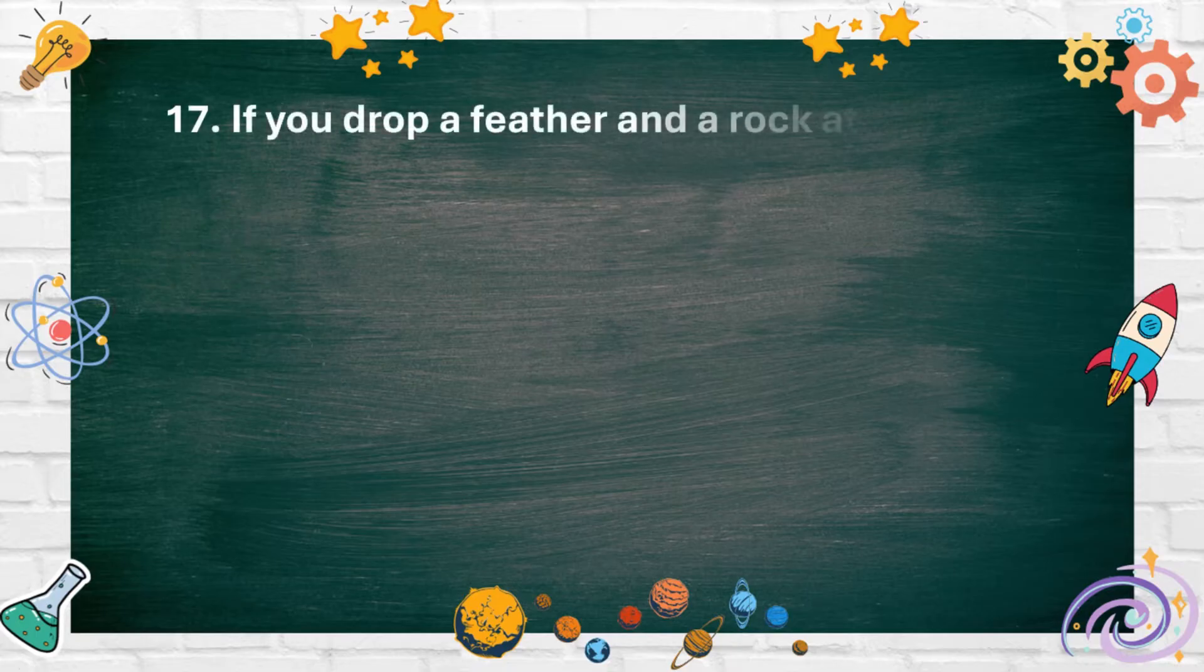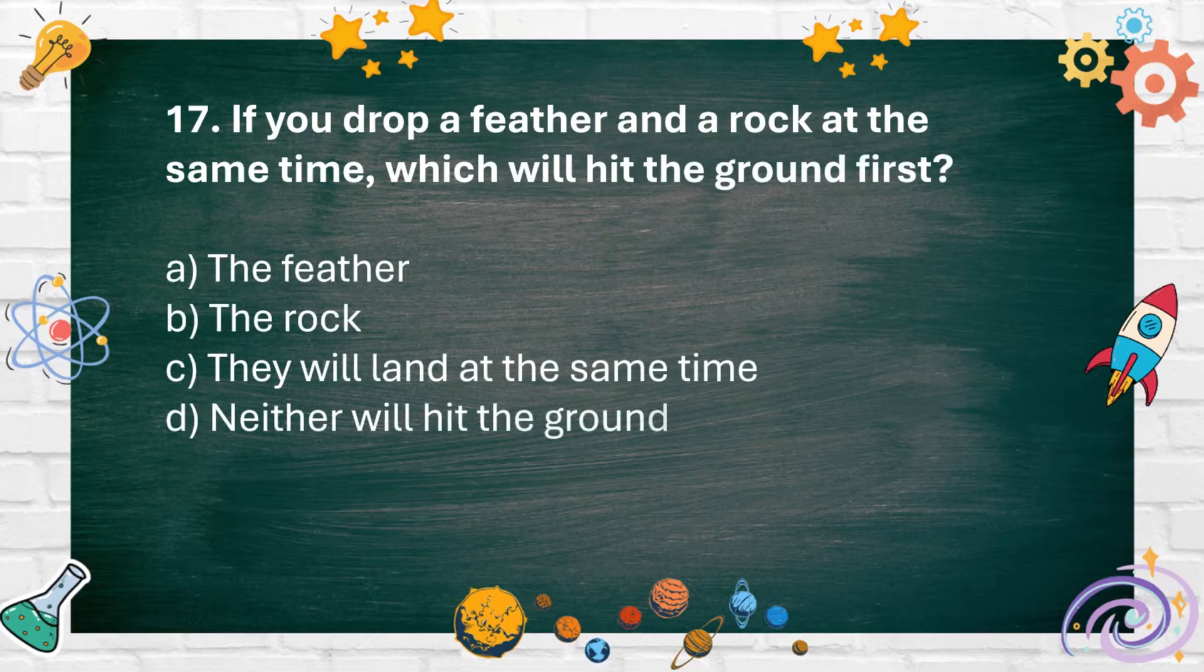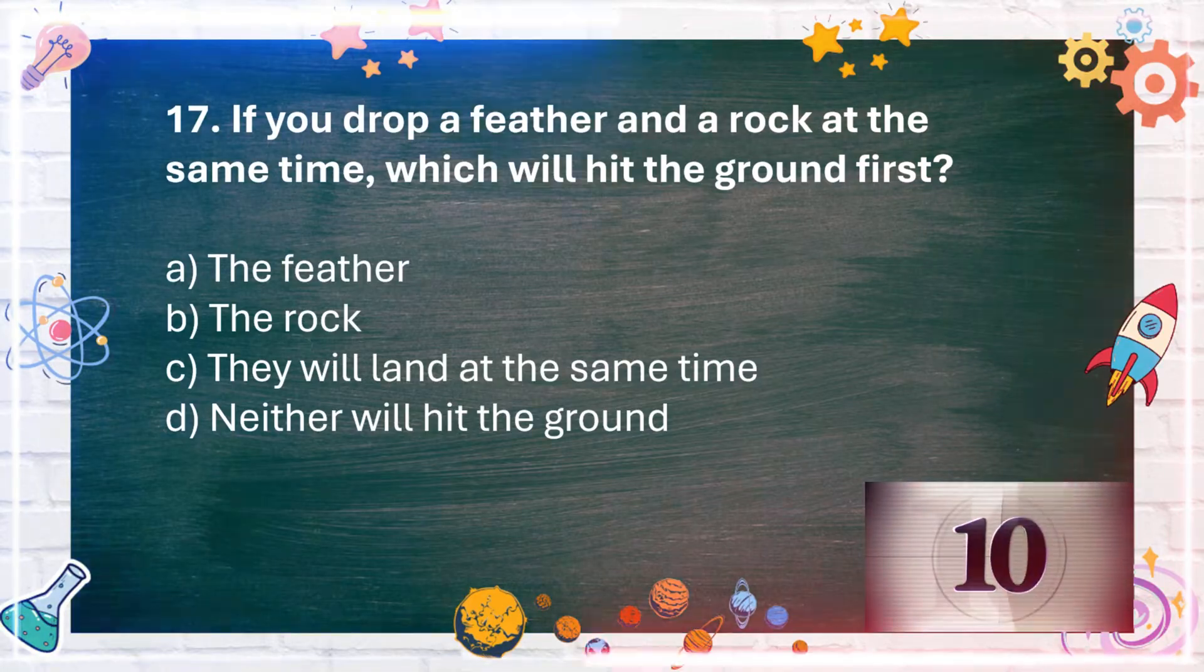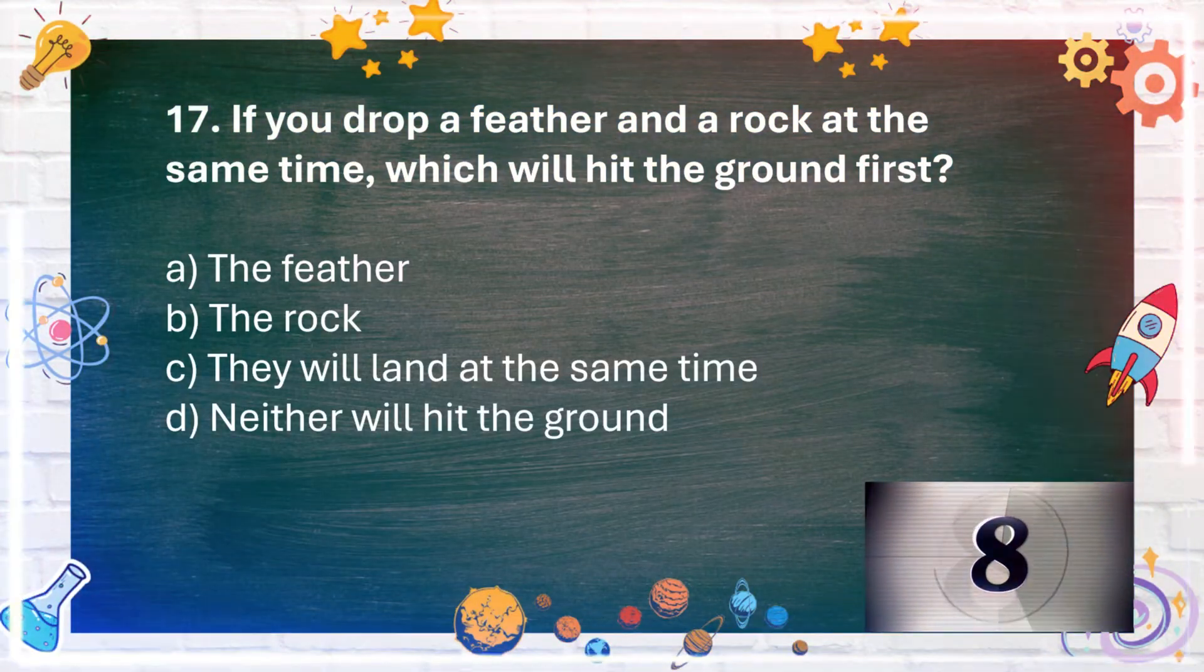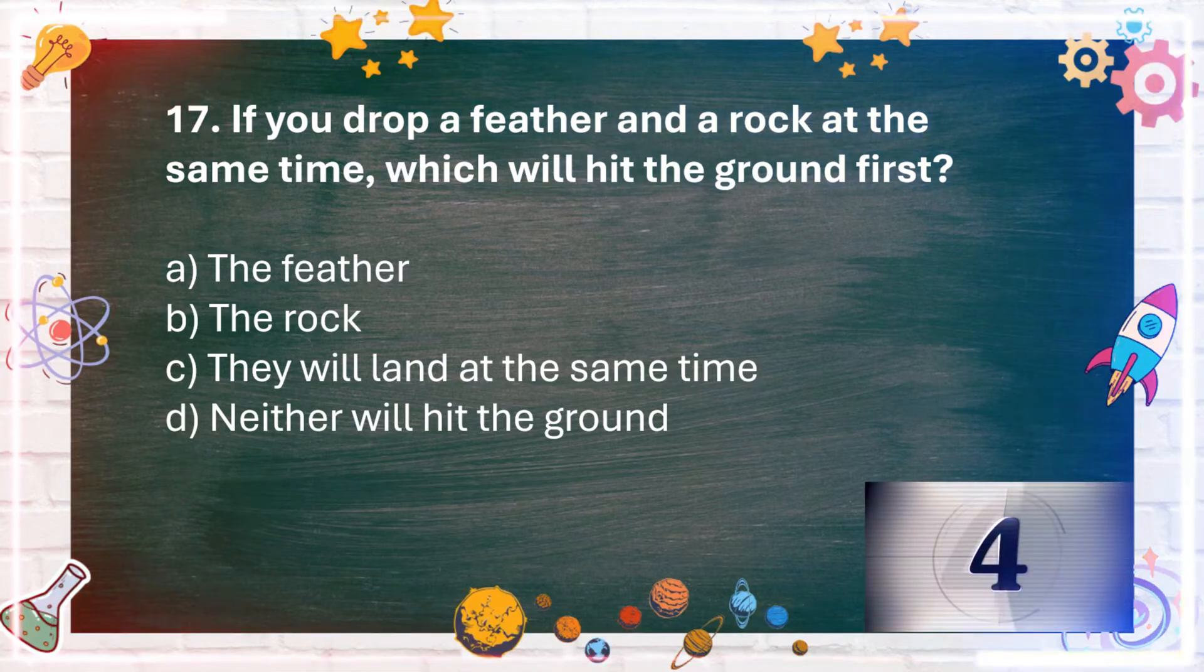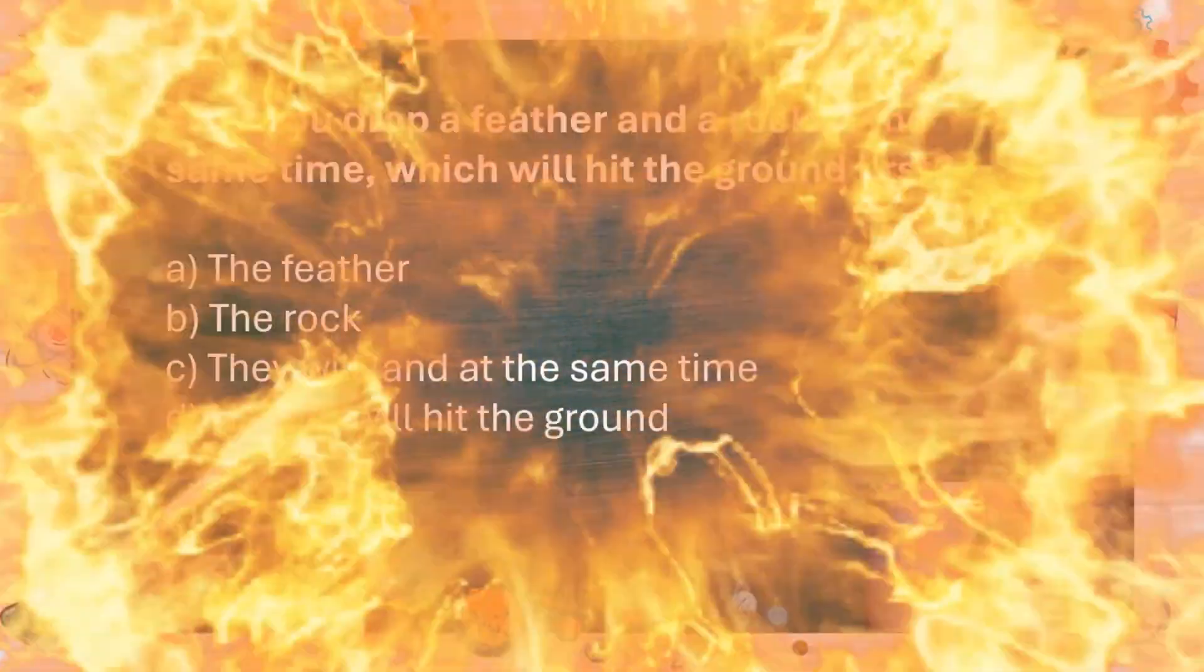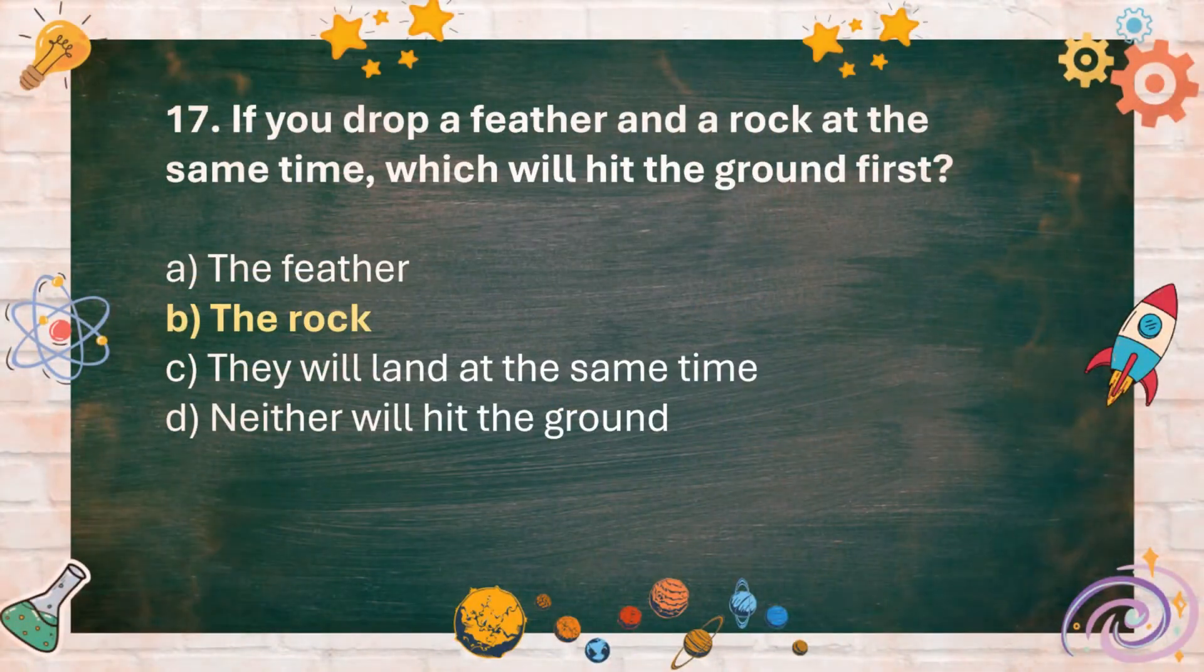Number 17. If you drop a feather and a rock at the same time, which will hit the ground first? A. The feather B. The rock C. They will land at the same time D. Neither will hit the ground. The answer is B. The rock.